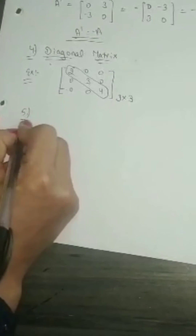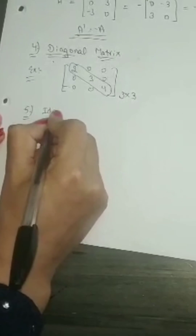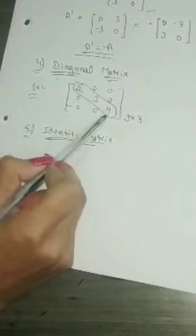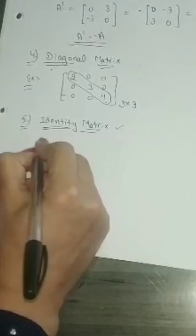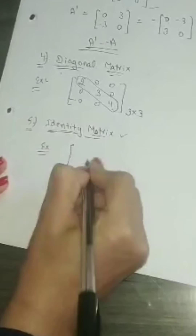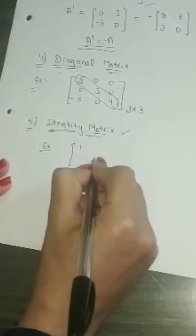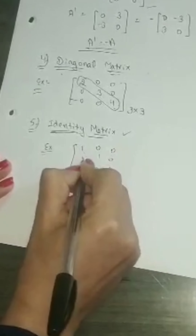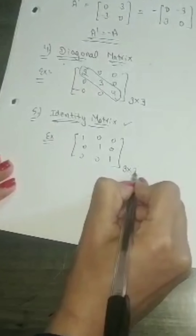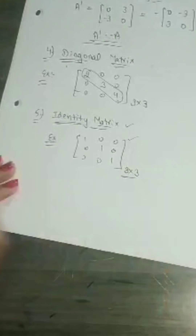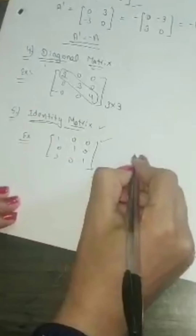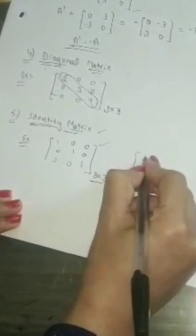Next is the identity matrix. If in the diagonal elements we are having 1, 1, 1, then the matrix is called an identity matrix. It has 1s on the diagonal and 0s everywhere else — 3 rows and 3 columns. This is an identity matrix of order 3. We can also have an identity matrix of order 2.